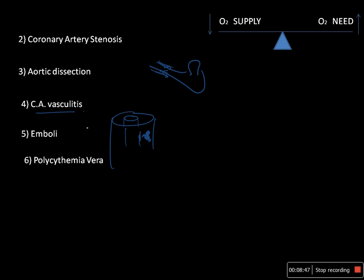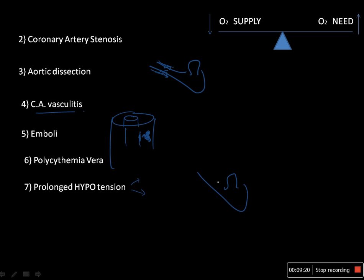Next is thromboembolism and atheroembolism, already discussed. Next is polycythemia vera, where increased blood counts raise blood viscosity and can lead to ischemia. Very importantly, prolonged hypotension can also cause ischemia. For example, a patient in a dentist's chair undergoing vasovagal shock may develop myocardial infarction. The coronary artery perfusion pressure is mainly maintained by aortic pressure, so prolonged hypotension decreases aortic pressure, decreasing coronary perfusion pressure and oxygen supply.